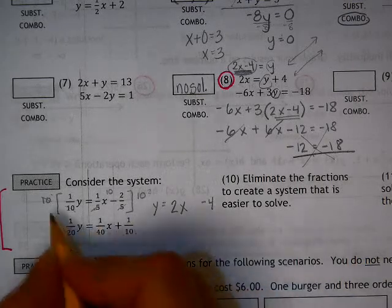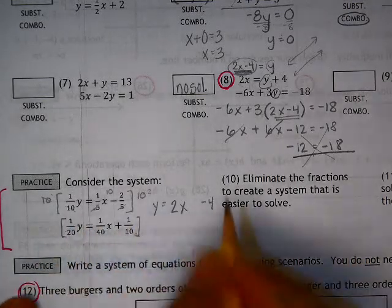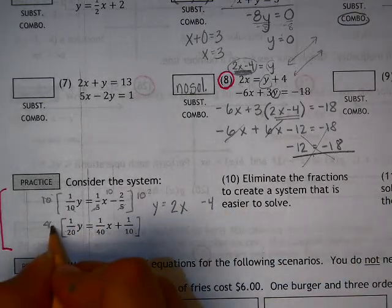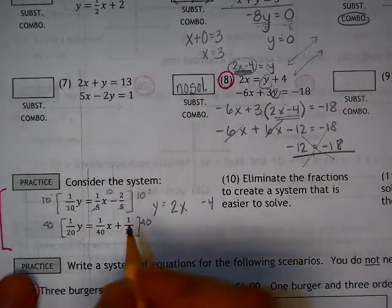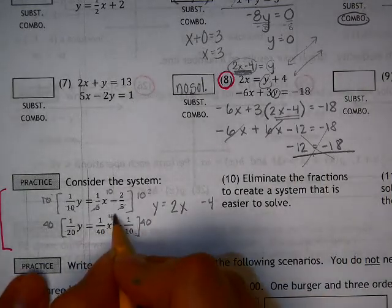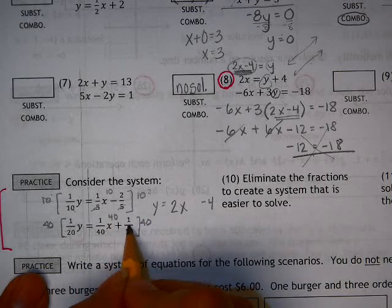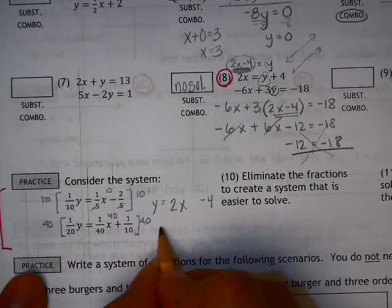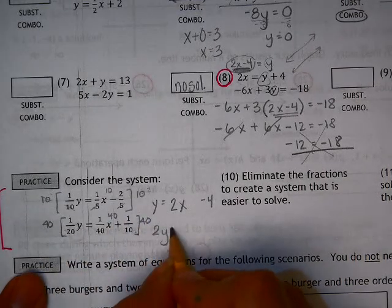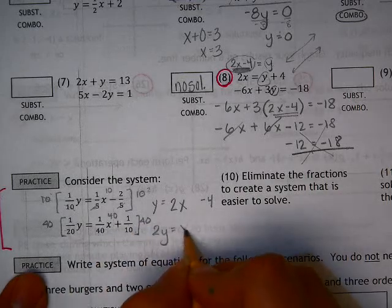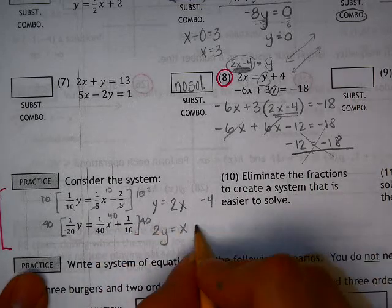We're going to do the same thing here. Here again, we want to do our least common denominator, which is 40. So I'm going to multiply both sides by 40. What happens, you need to make sure you distribute. So 40 divided by 20 is 2. 40 divided by 40 is 1. And 40 divided by 10 is 4.